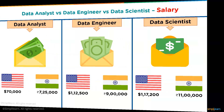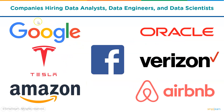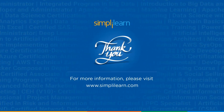Now let's look at the top companies hiring for data analysts, data engineers, and data scientists. These include Google, Tesla, Amazon, Facebook, Oracle, Verizon, and Airbnb. These are some of the top companies that hire for all three roles, and that brings us to the end of this video tutorial on data analyst versus data engineer versus data scientist.